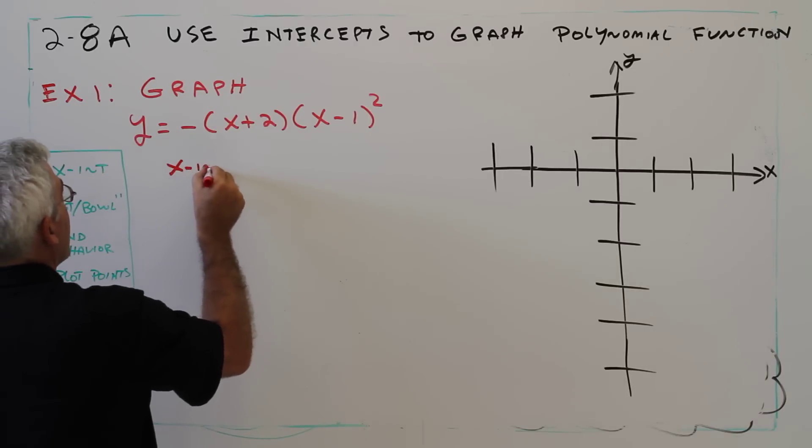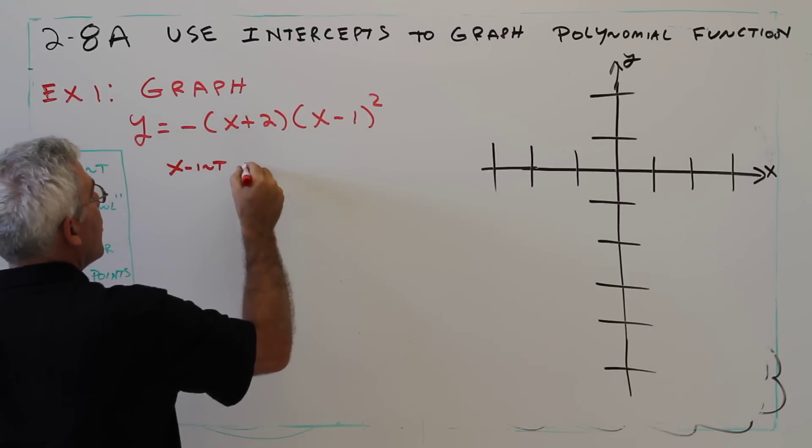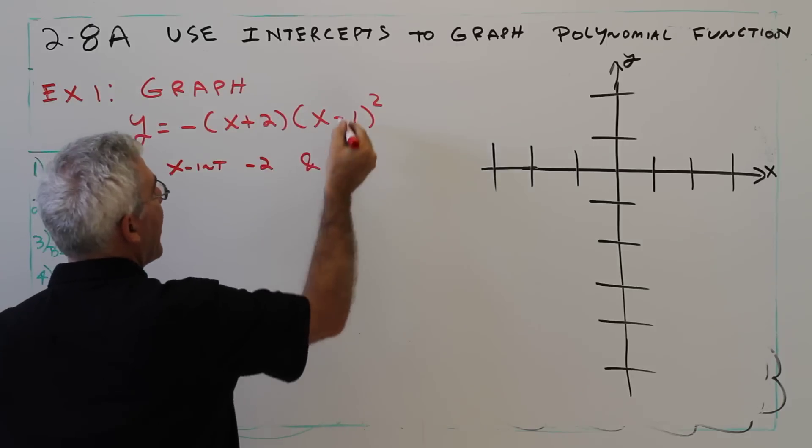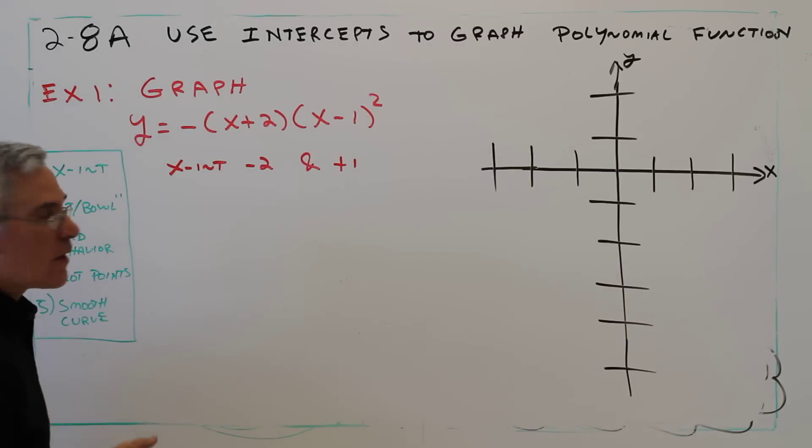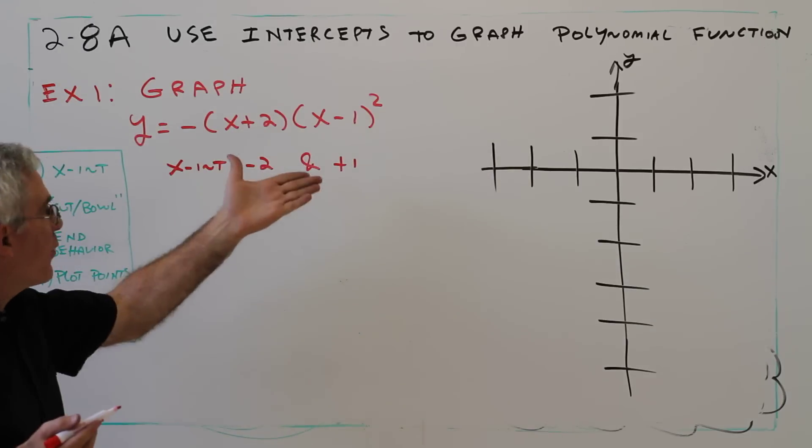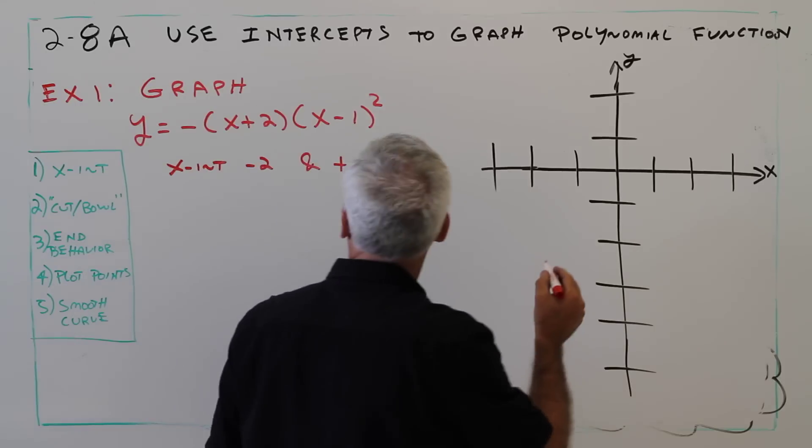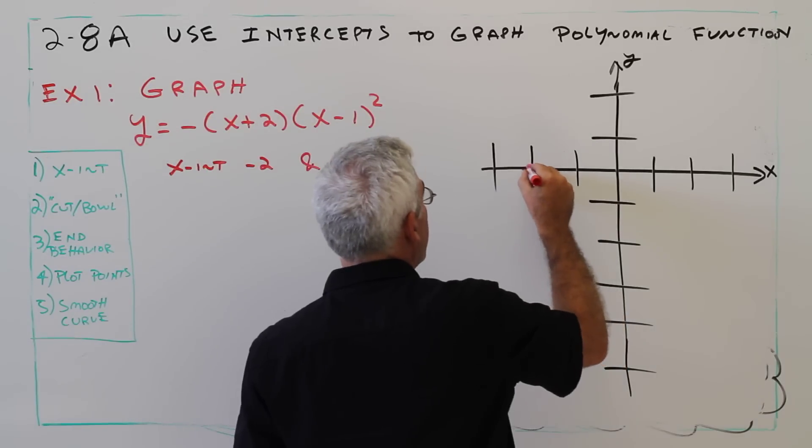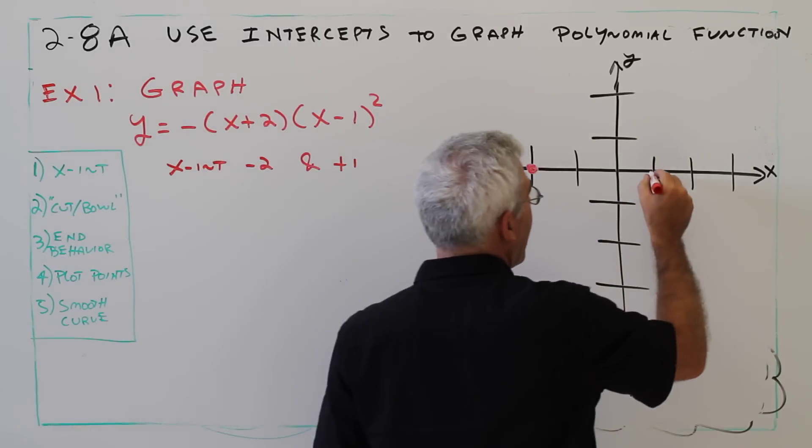The x-intercepts occur at negative 2 and at positive 1. So right away what I'll do is I'll plot those on my coordinate axis. Negative 2 and positive 1.